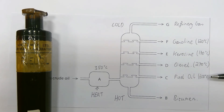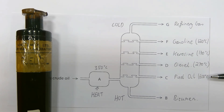The next fraction is called fuel oil, also known as furnace oil. This is commonly burned in the engine boilers of large ships. It is a mixture of hydrocarbons with approximately 20 to 70 carbon atoms per molecule and condenses at around 600 degrees Celsius.